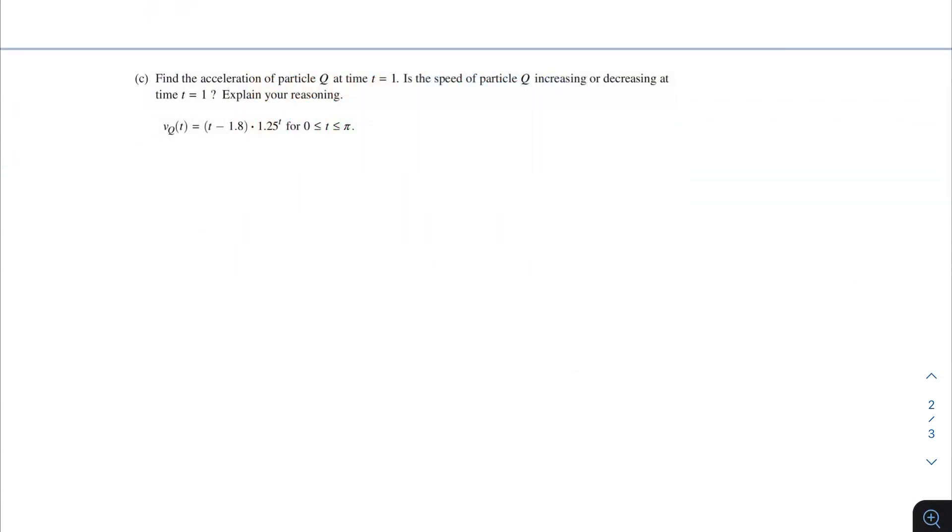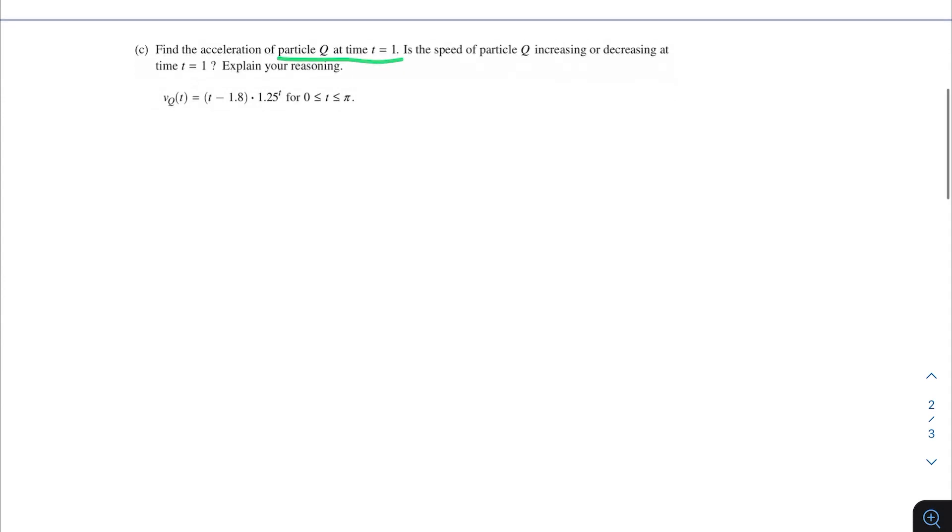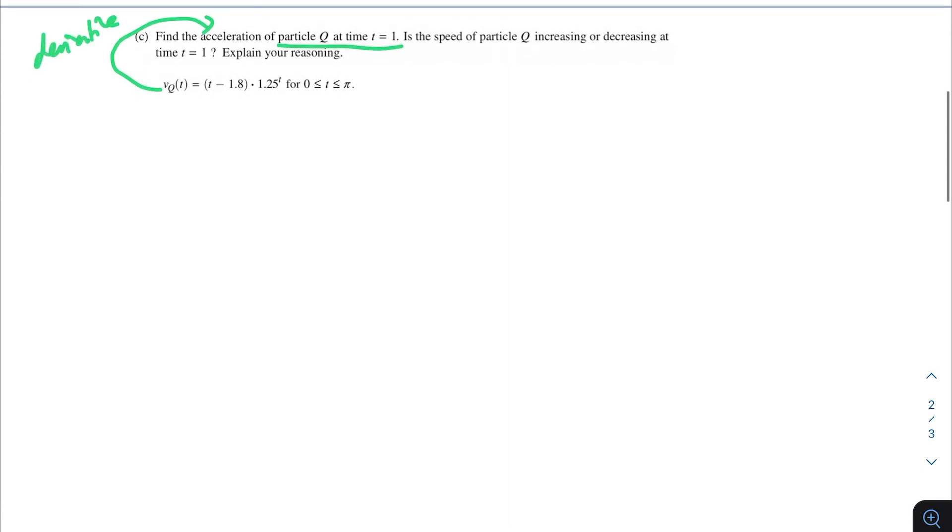Here we're being asked to find the acceleration of particle Q at time t equals 1, and then we're being asked if the speed of particle Q is increasing or decreasing at that time. Remember what I said, how we get from velocity to acceleration? We take the derivative. Basically, what we're just going to be finding is V prime at 1. You can just plug that into your calculator, which would be the same thing as a_Q(1), which equals 1.027.